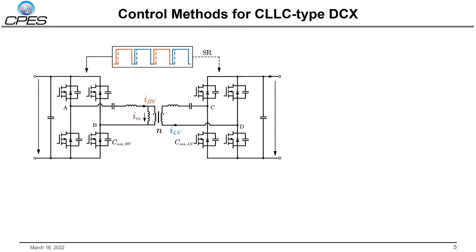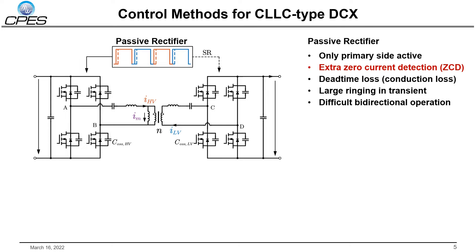Two control methods for CLLC DCX will be discussed. The first method is the passive rectifier, where only the primary side has gate signals and the secondary side works as a passive rectifier. To reduce conduction loss caused by current through the body diodes during dead time, synchronized rectification can be adopted. However, an extra ZCD circuit is required in SR control, and the ZCD is hard to implement in high-voltage applications, such as voltages larger than 150 volts.